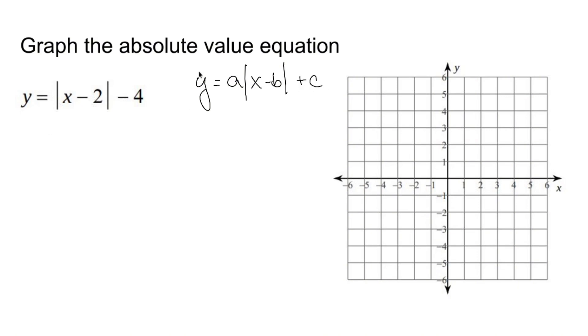What a does is a is the number living in front of the absolute value. If a is positive, it opens up and it acts as a slope, so a is your slope. If a is negative, it opens downwards like that.